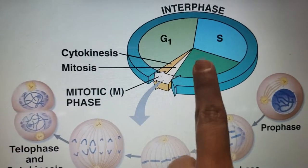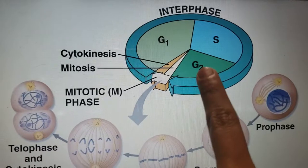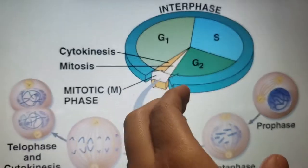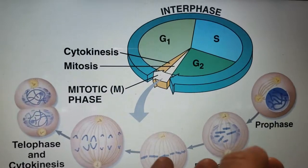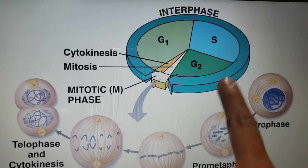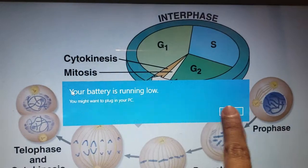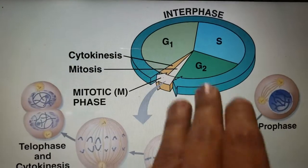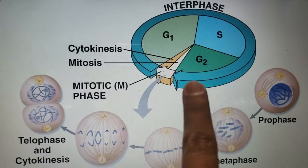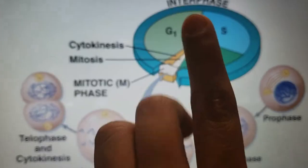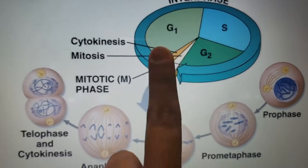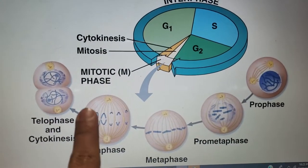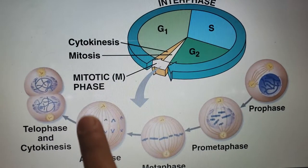There is another checkpoint in G2 to make sure the cell will be able to go to mitosis, divide, and be healthy. If it doesn't pass this checkpoint, the cell will die. If it does pass, it goes to mitosis, which includes all these phases I'm going to explain.